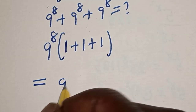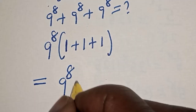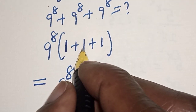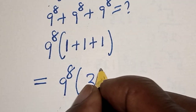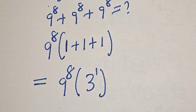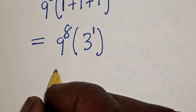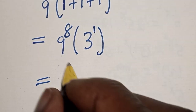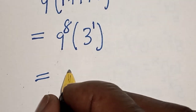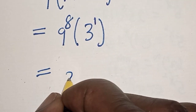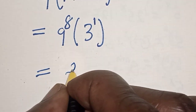This is equal to 9 raised to power 8 times bracket 1 plus 1 plus 1, which is 3, and this 3 is also 3 raised to power 1. Then this is equal to 9 raised to power 8 times 3 raised to power 1. Now, 9 can be expressed as 3 squared.